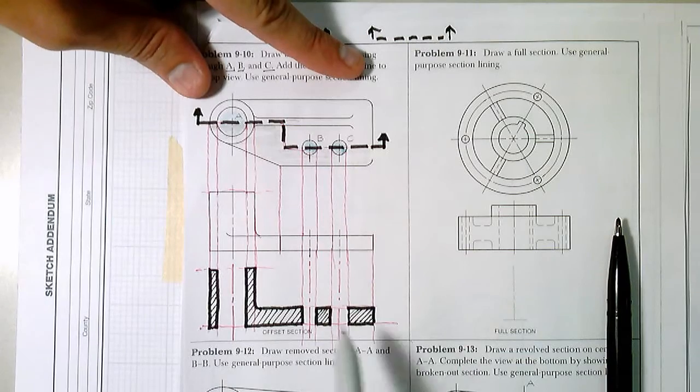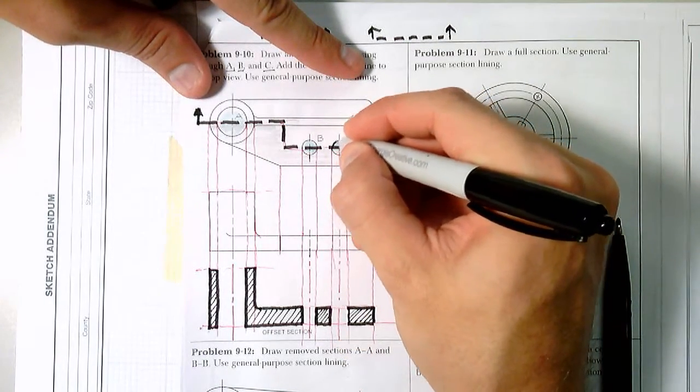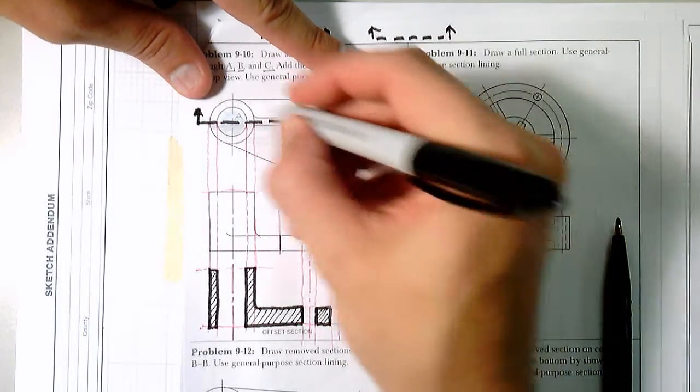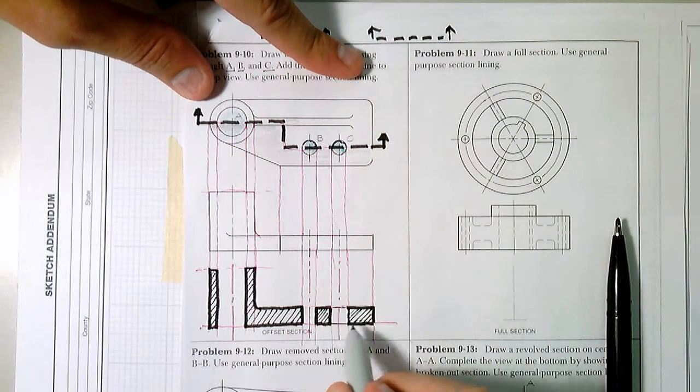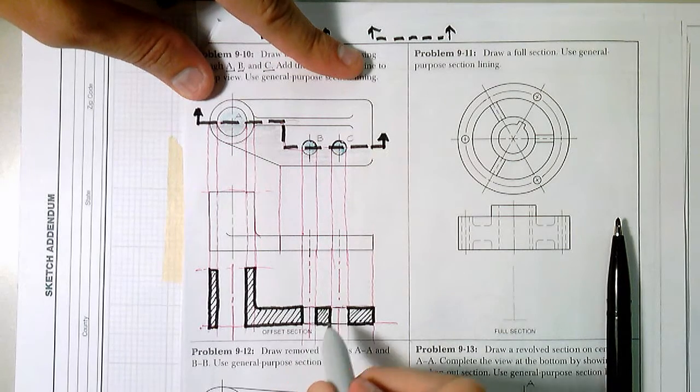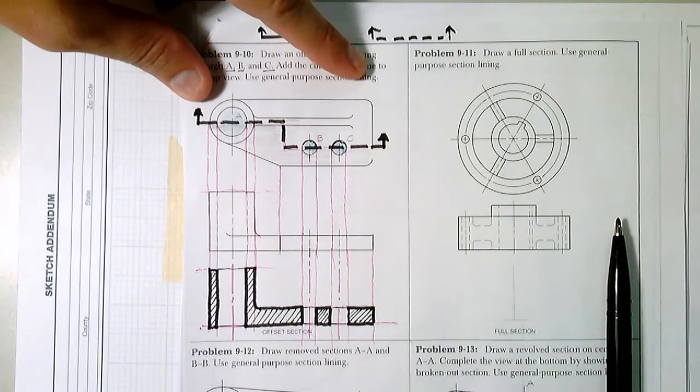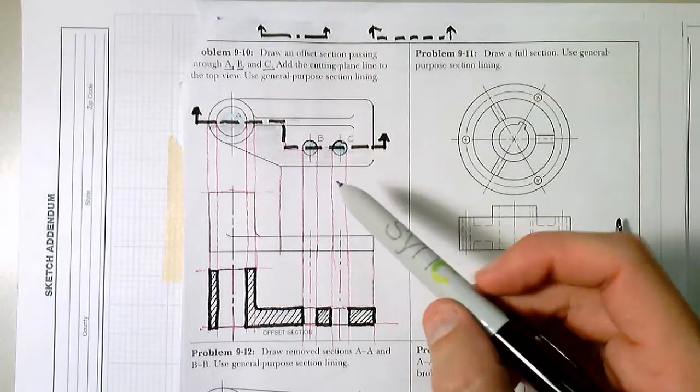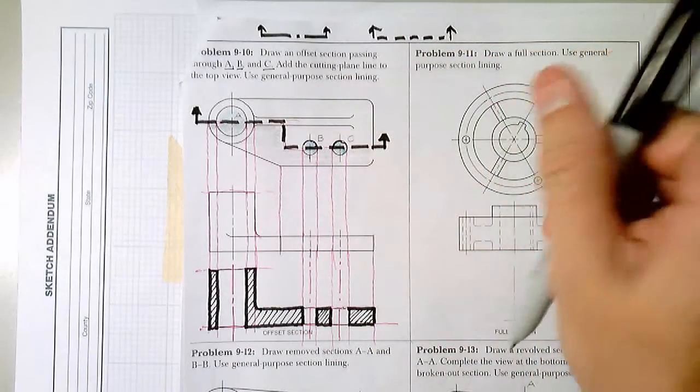Now there's still some missing lines. And the missing lines are the areas in the back of each of these A, B, and C holes. And that will give you problem 9-10. We've showed an offset section jogging through all three.